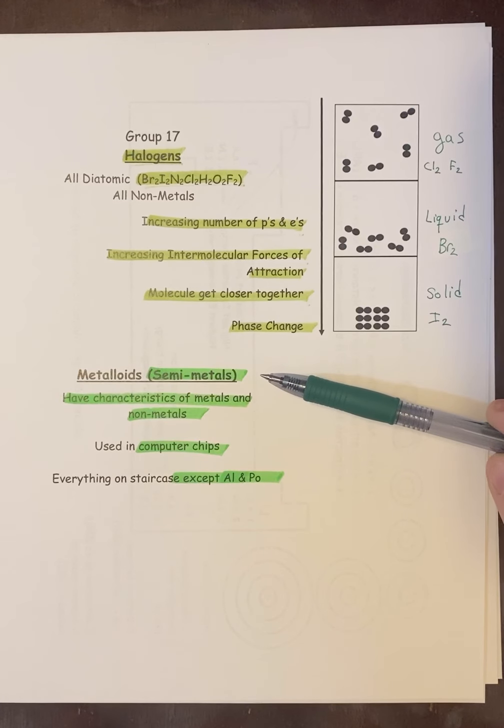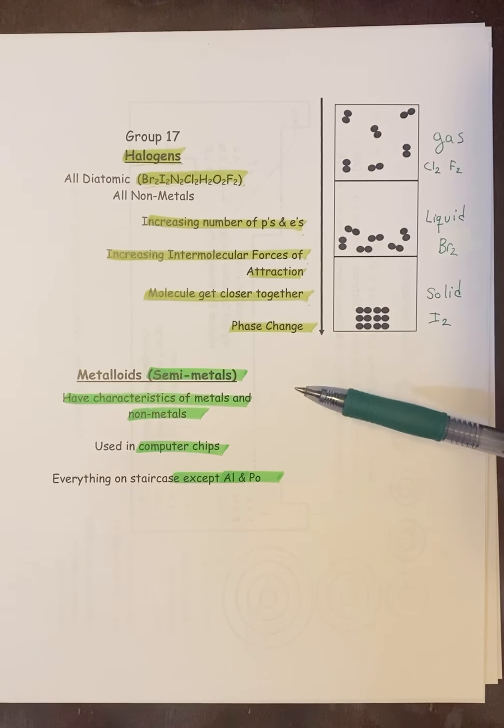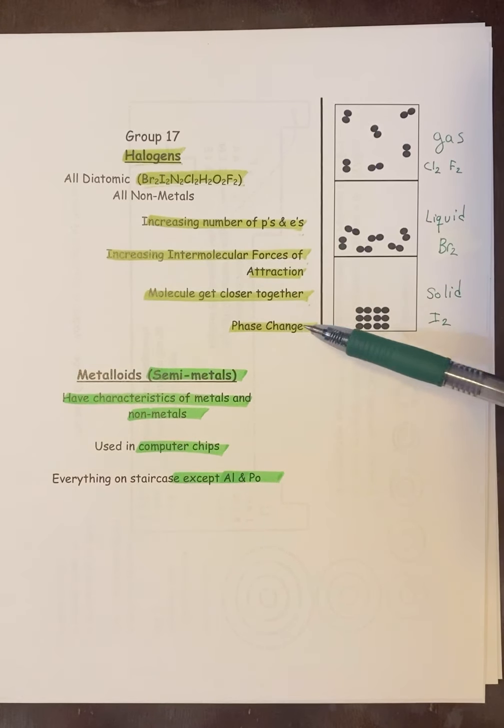The last one, metalloids, or semi-metals, you can call them either one. They have the characteristics of both metals and non-metals. They're used in computer chips, everything on the staircase except AlPo. Turns out that their metal and non-metal characteristics usually depend on their temperature. So typically when they're cold, they act more like a metal, and when they're warm or hot, they act more like a non-metal, but that's not really a rule. Some don't play that game, but some do. So they can be temperature-dependent, but that part you don't really need to know.